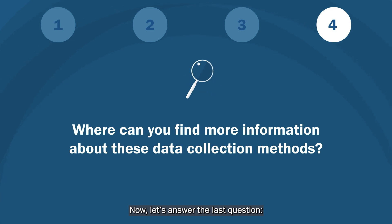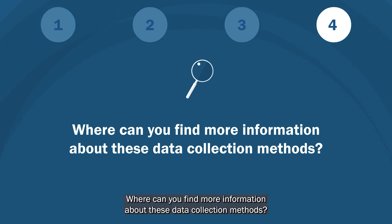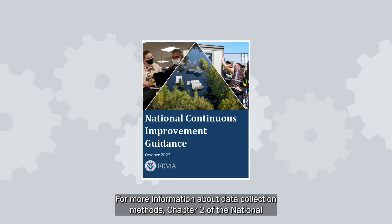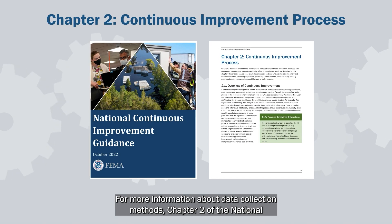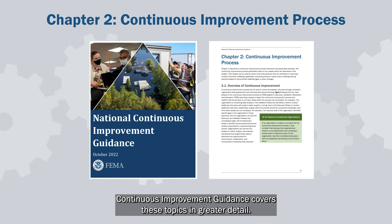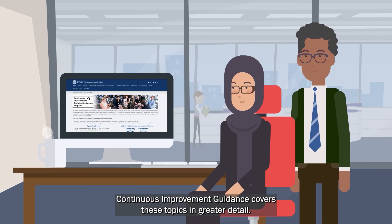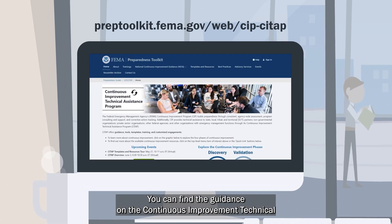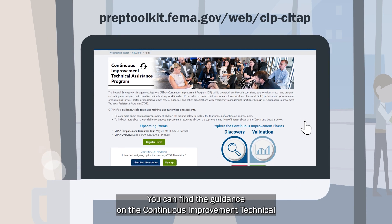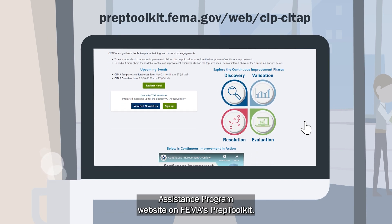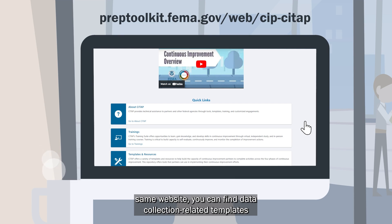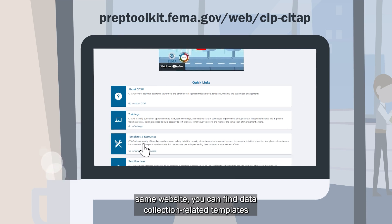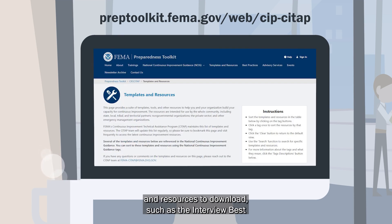Where can you find more information about these data collection methods? Chapter 2 of the National Continuous Improvement Guidance covers these topics in greater detail. You can find the guidance on the Continuous Improvement Technical Assistance Program website on FEMA's PREP toolkit. On the same website, you can find data collection-related templates and resources to download.